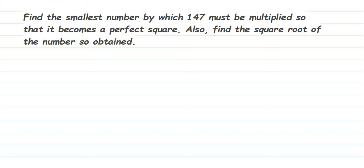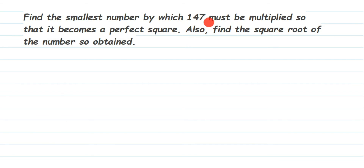Hey everyone, this is a question on squares and square roots. The question is: find the smallest number by which 147 must be multiplied so that it becomes a perfect square. Also find the square root of the number so obtained. So 147 is not a perfect square — we have to multiply it by the smallest number so that 147 will become a perfect square, and then find that square root.